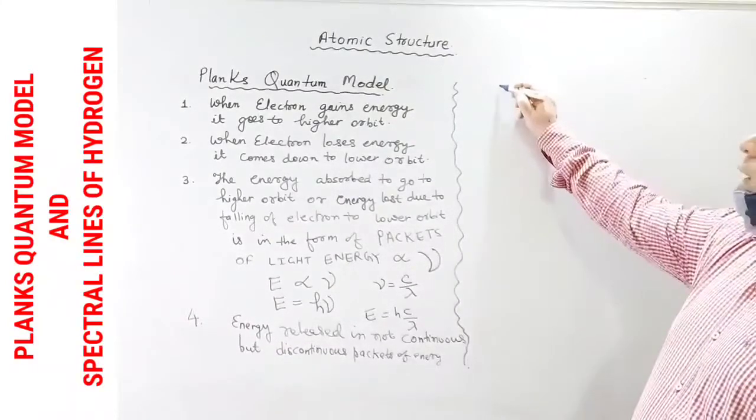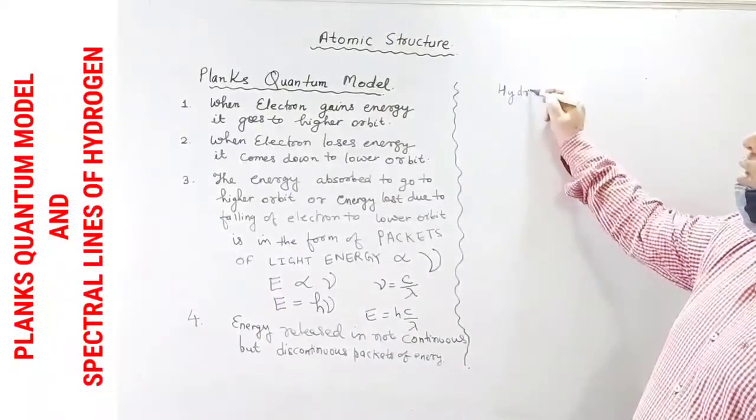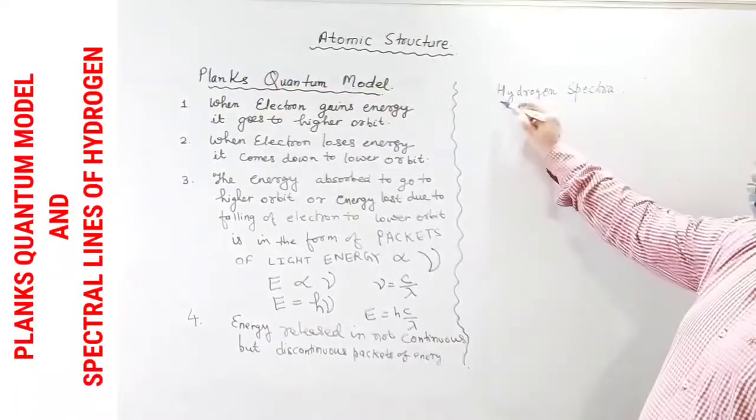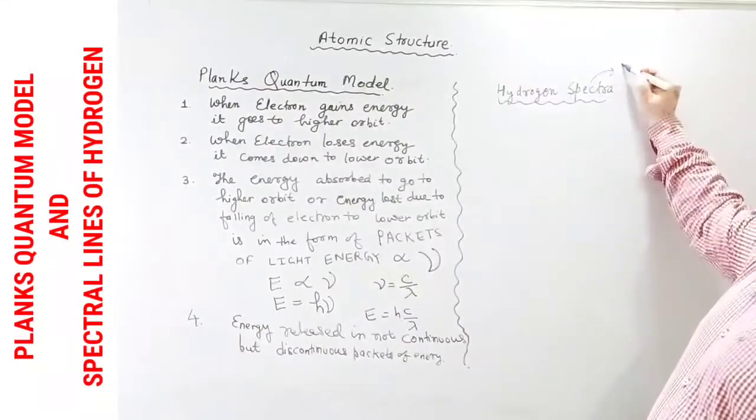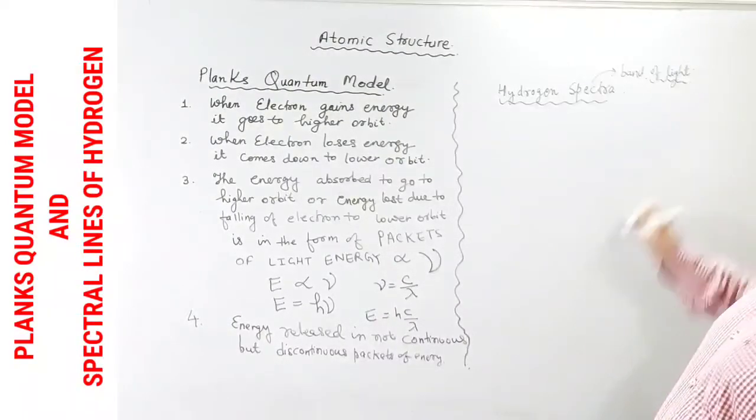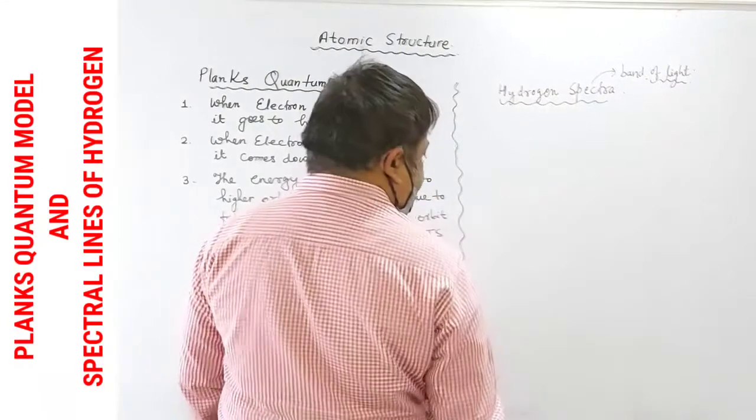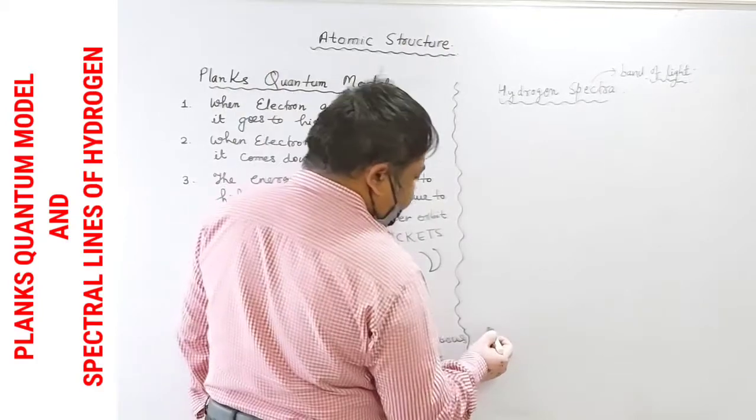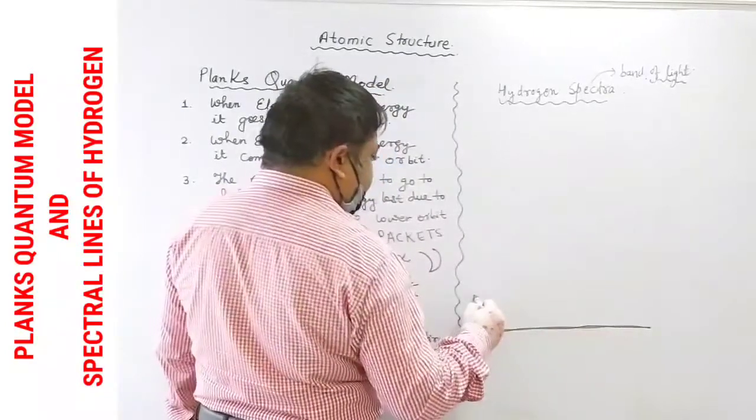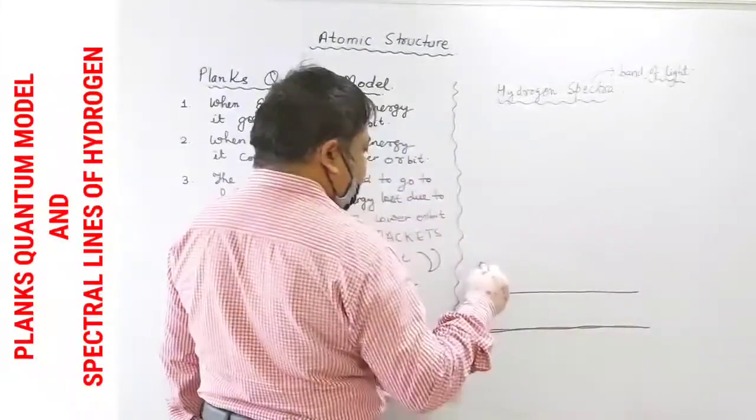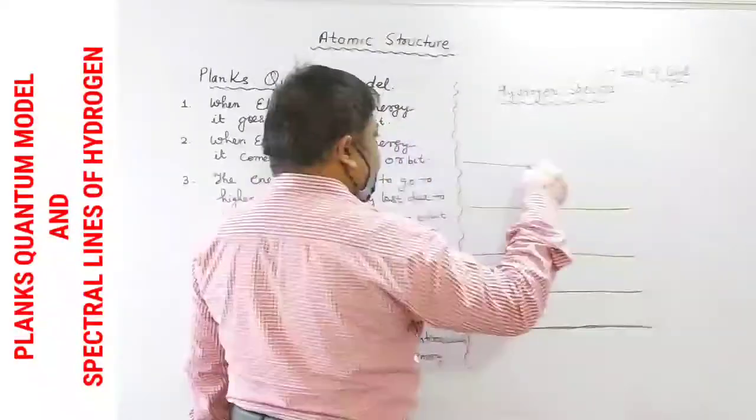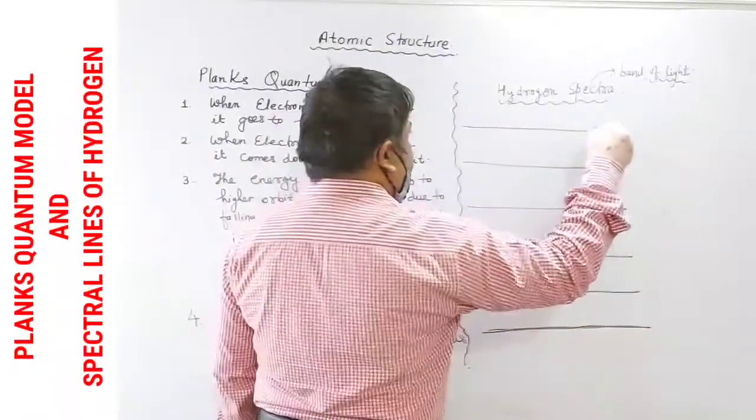Now how to draw the hydrogen spectra? Hydrogen spectra. Spectra means what? Band of light. Spectra means band of light, various types of lights of various energies. So what we will do? We will draw seven energy levels. This is n equal to one, n equal to two, n equal to three, n equal to four, n equal to five, six and say it is seven.